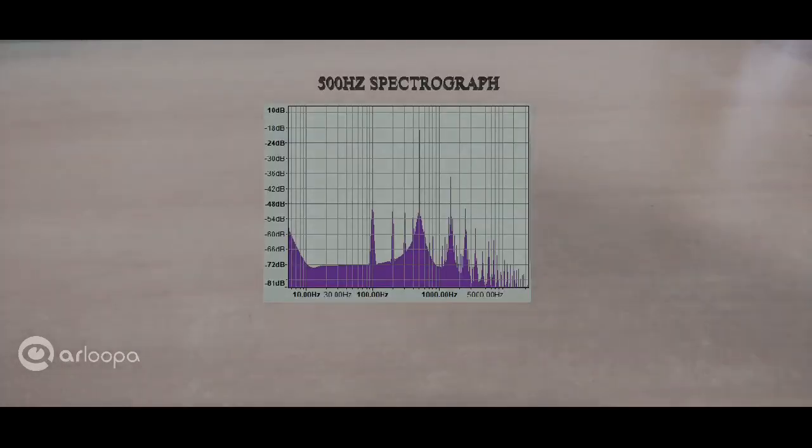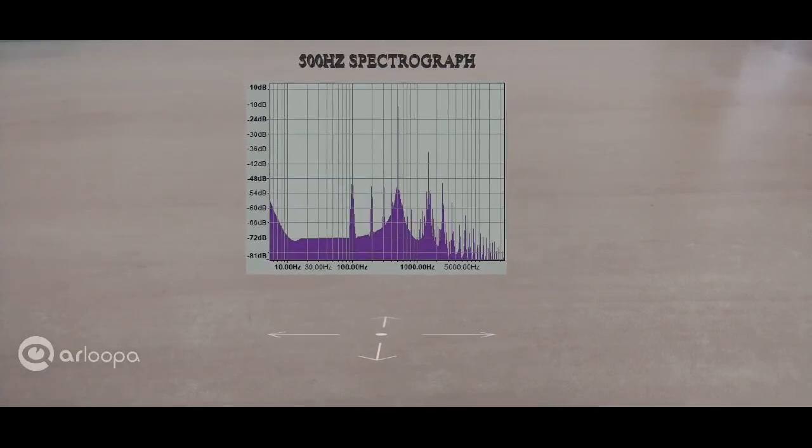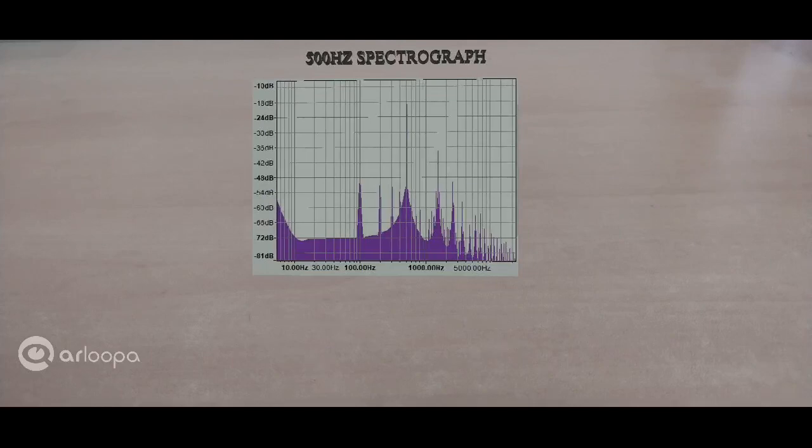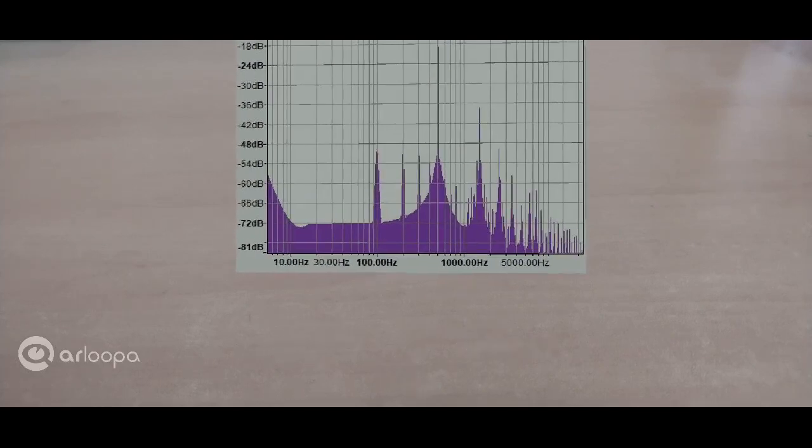Alright, this is a spectrograph of a 500 Hz square wave. If it was a spectrograph of a 500 Hz sine wave, all you'd see is a single line at 500 Hz. But since it's a spectrograph of a square wave, in addition to the fundamental frequency, you also observe lots of harmonics. But the most important thing here is the harmonics are odd harmonics. Meaning the next peak here is like 1500 Hz. After 500, 500 times 3 is 1500. And then the next peak here is 2500 Hz, which is 500 times 5.